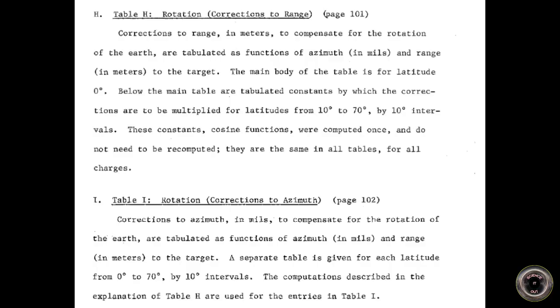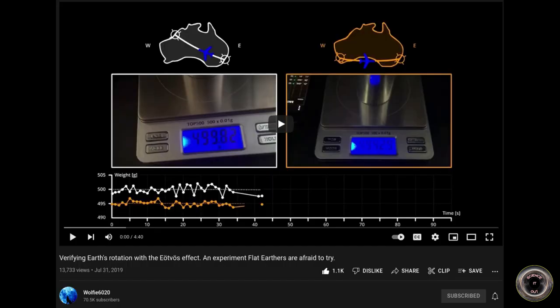Long-range ballistics has adjustments for Coriolis. There is also a measurable Eötvös effect. The weight of objects changes in east-west motion, which is also partially caused by the Coriolis force.